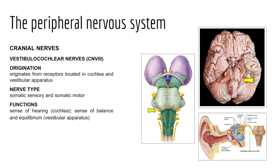Cranial nerve eight is the vestibulocochlear nerve, with two parts: the cochlear region, which helps with hearing, and the vestibular region, which aids in equilibrium, together helping maintain orientation in space. It is mostly sensory in function but has a motor component associated with muscles of the middle ear that hold the auditory ossicles to prevent sound damage from loud noise.